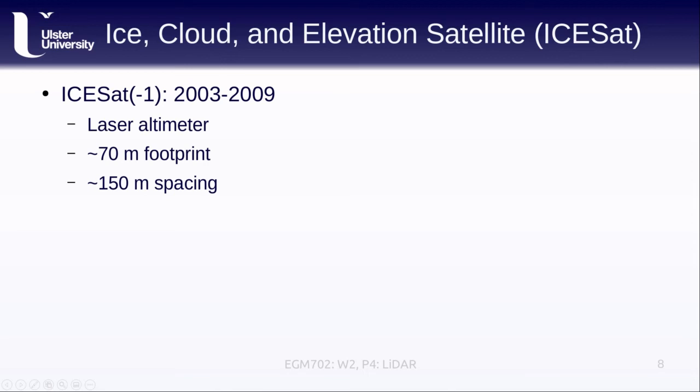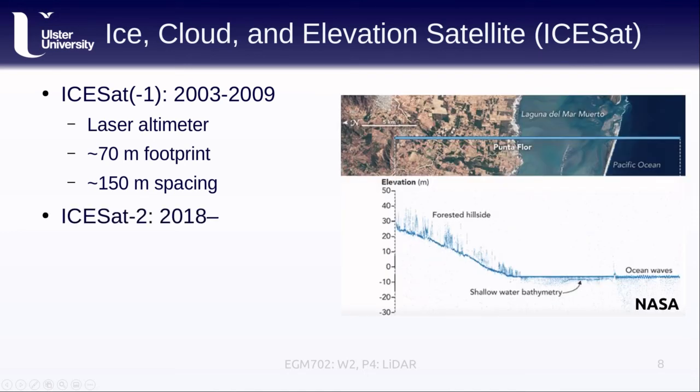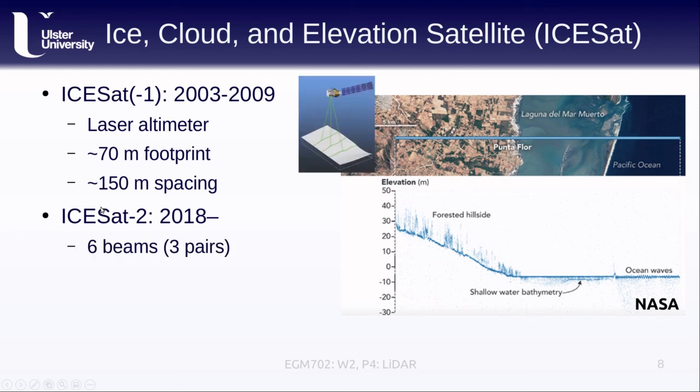And in 2018, NASA launched ICESat-2, which is an update of the satellite. Now instead of a single-shot laser altimeter that has a very large footprint that's very sparsely sampled, ICESat-2 actually has three different pairs of beams, so six total tracks that it's measuring along. Each of these different pairs is separated by 90 meters, and the spacing between each set of pairs is about three and a half kilometers.